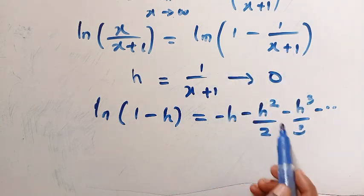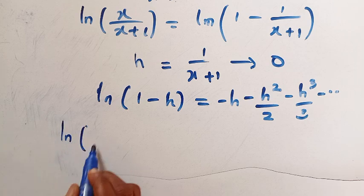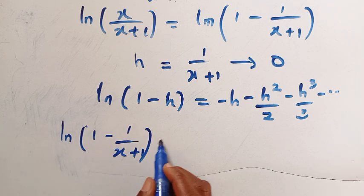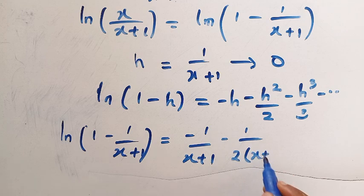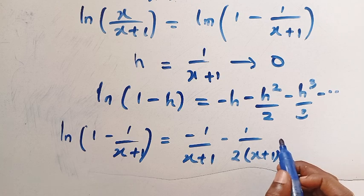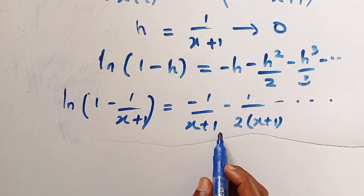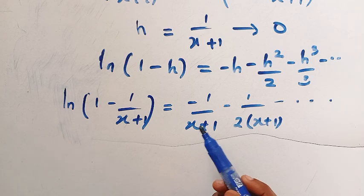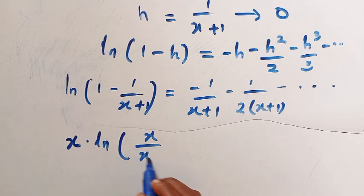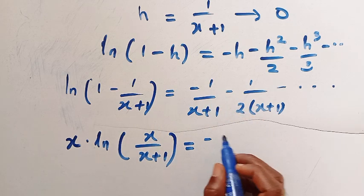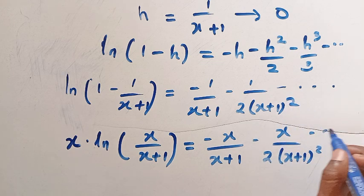Multiplying through by x, we get x times ln of x divided by x plus 1 equals negative x over x plus 1, minus x over 2 times x plus 1 squared, minus and so on. This first term, negative x over x plus 1, equals negative 1 minus 1 over x plus 1. The remaining terms still contain x over x plus 1 squared and higher powers.